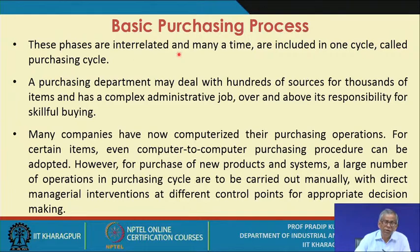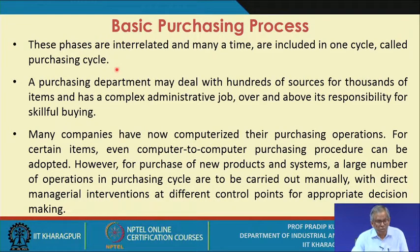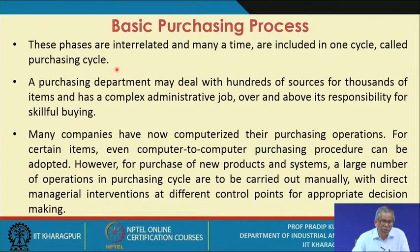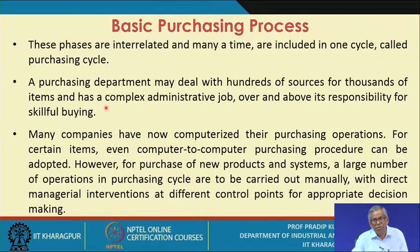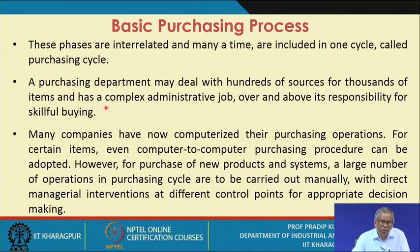These phases are interrelated and are often included in one cycle called the purchasing cycle. As an executive, manager, or purchasing officer, you should be aware of the phases in this purchasing cycle. A purchasing department may deal with hundreds of sources — meaning suppliers — for thousands of items. For an automobile company it may deal with thousands of components, and similarly an aircraft manufacturing company may deal with thousands of parts, components and materials.